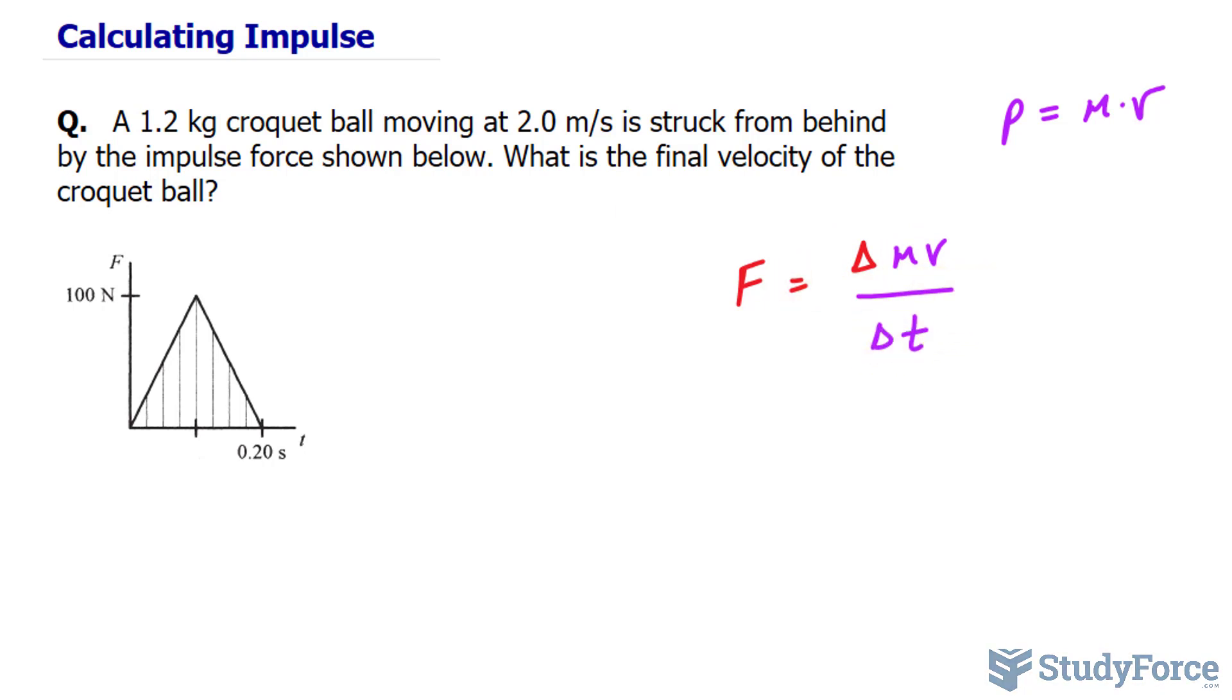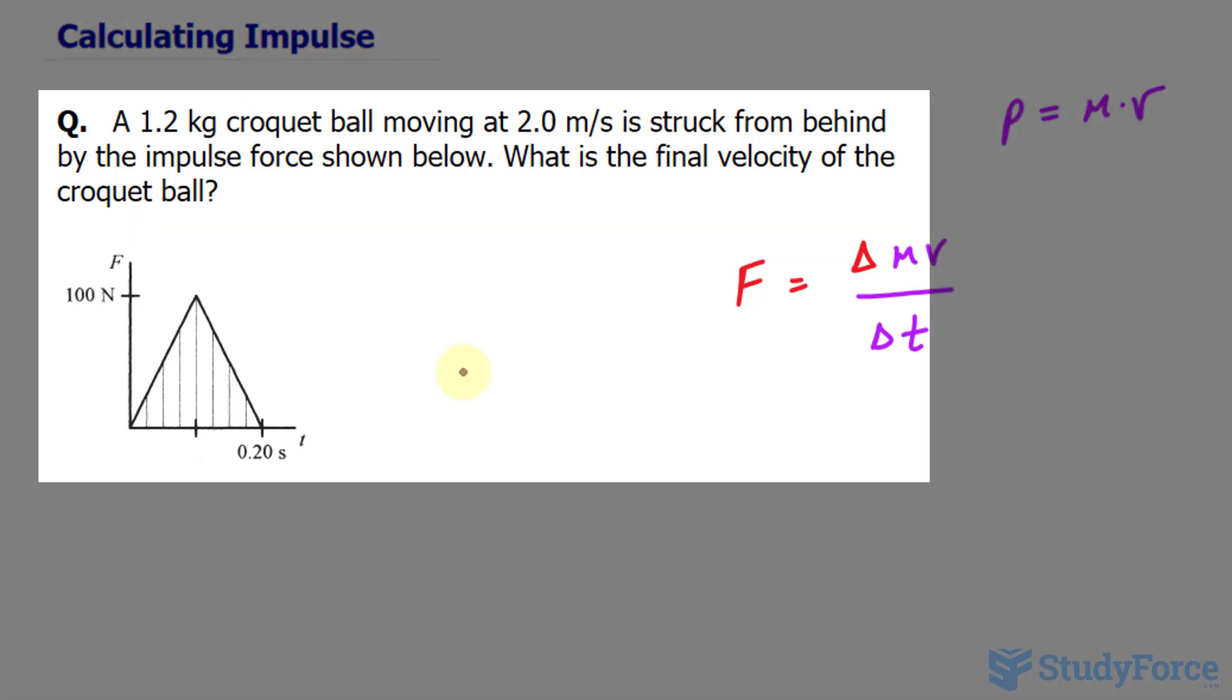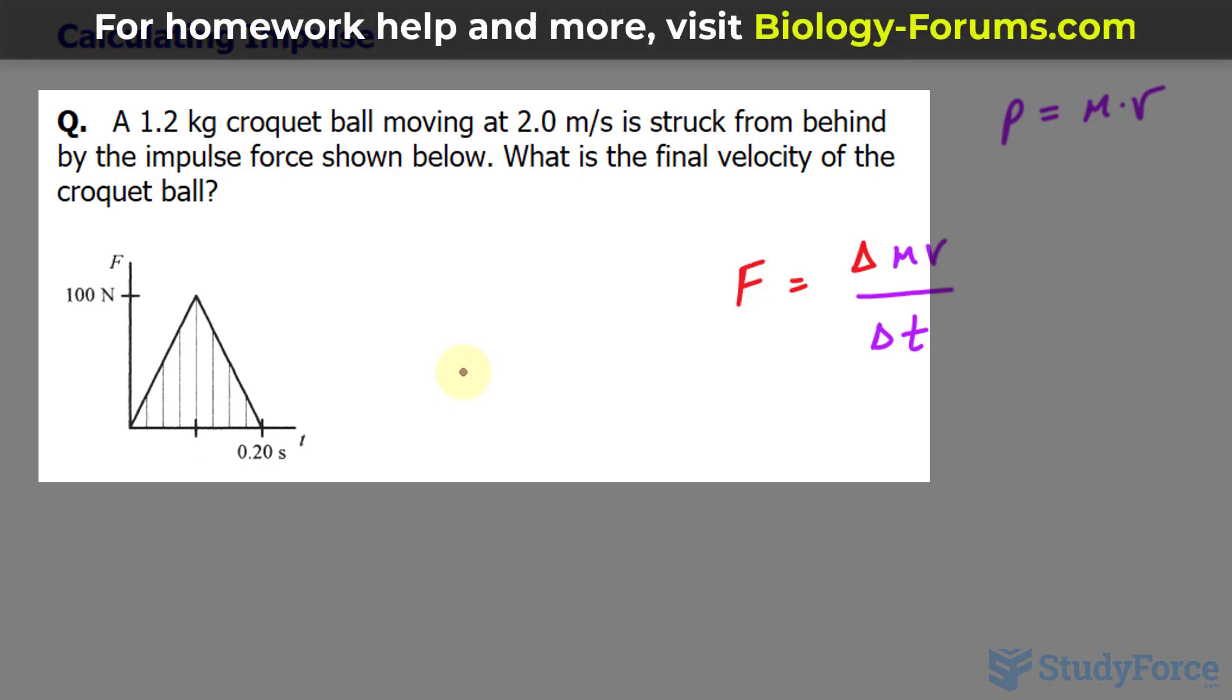We can use this relationship whenever we want to calculate the velocity of an object after it's been struck. Here we have a 1.2 kilogram croquet ball moving at 2.0 meters per second struck from behind by the impulse force shown below. What is the final velocity of the croquet ball?